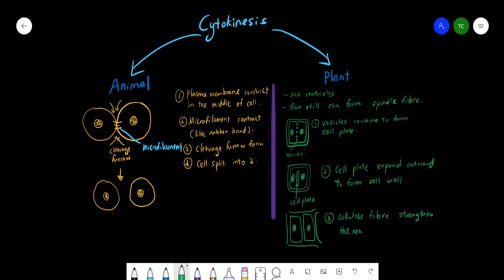The new cell wall is not tough enough, so it actually has to be strengthened by cellulose fibers. After it is strengthened by the cellulose fibers, then we say the cell wall is good to go.